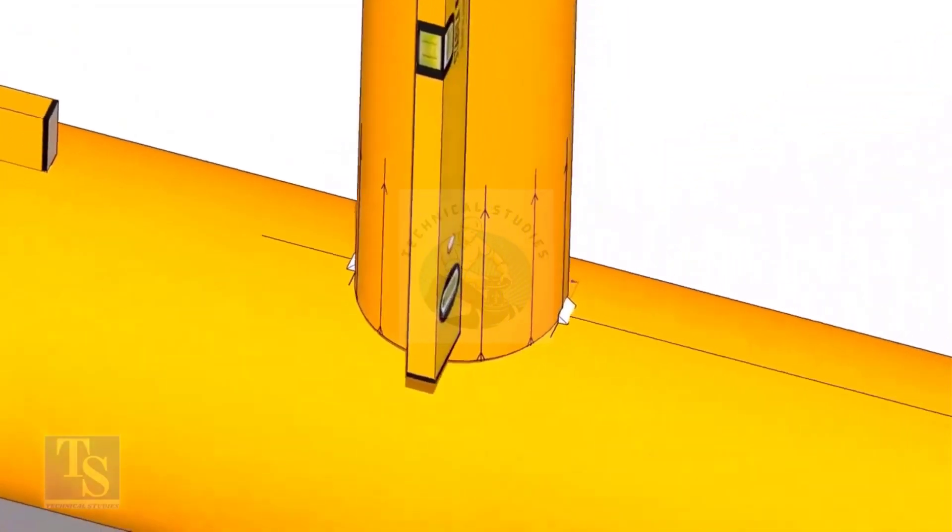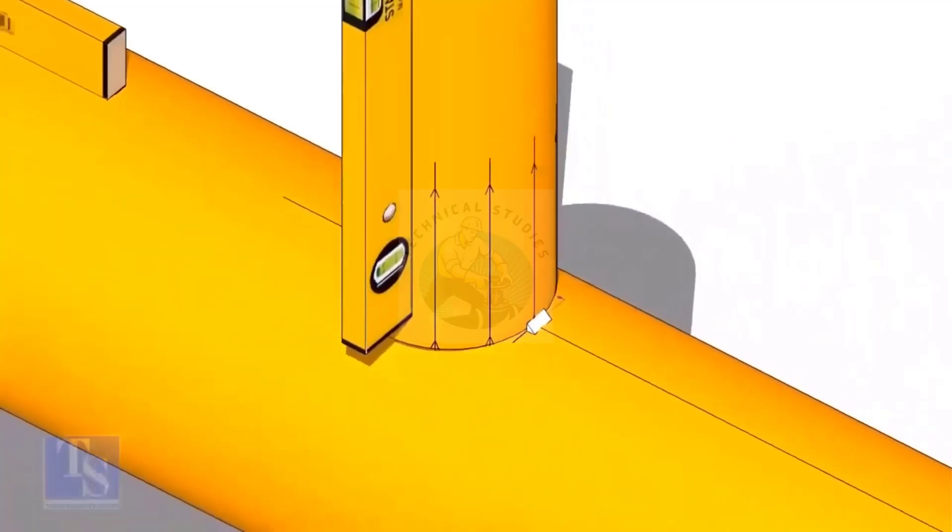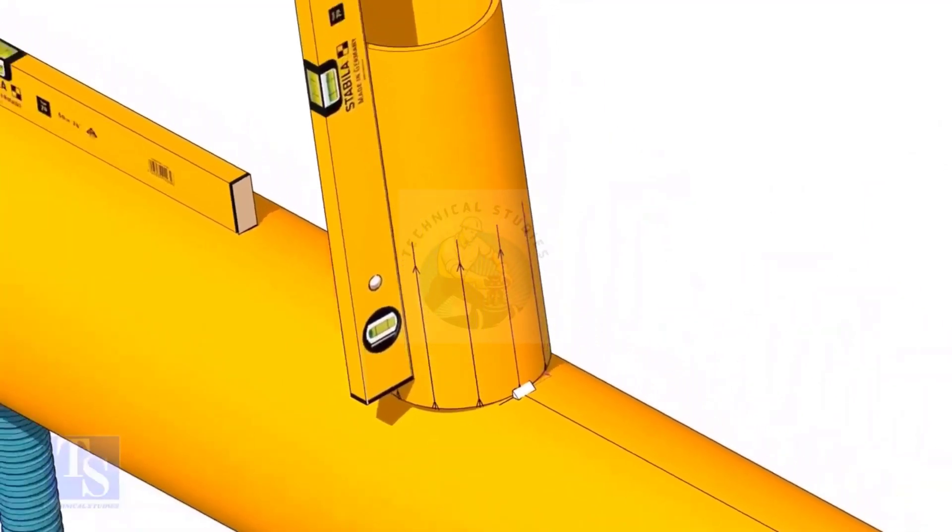Now make sure the pipe header and the branch are horizontally and vertically level. If required, strengthen the tack weld.